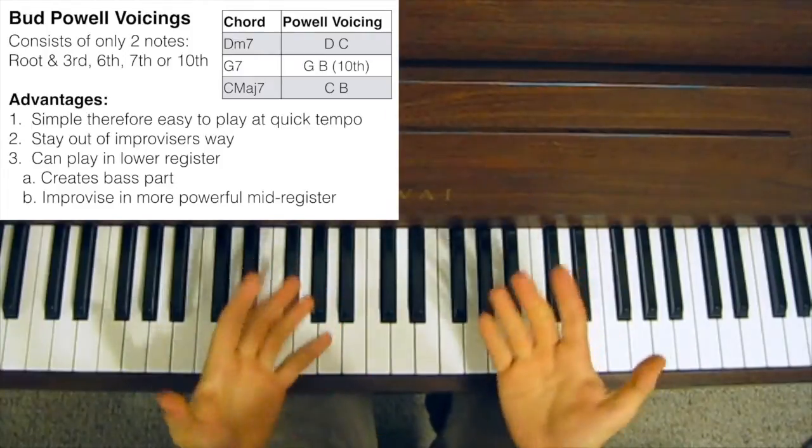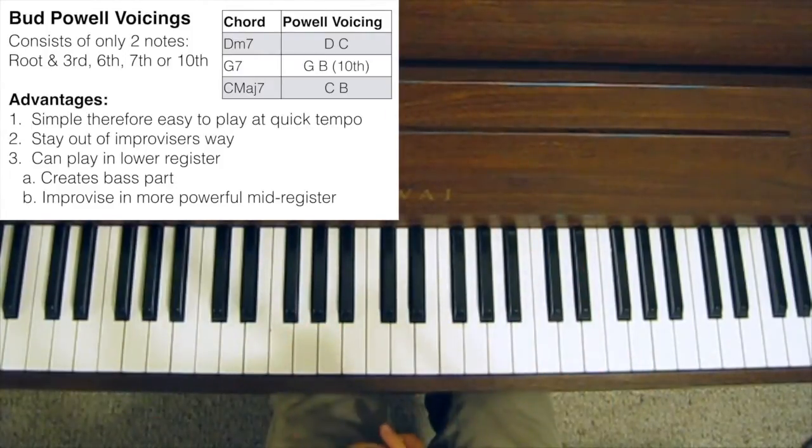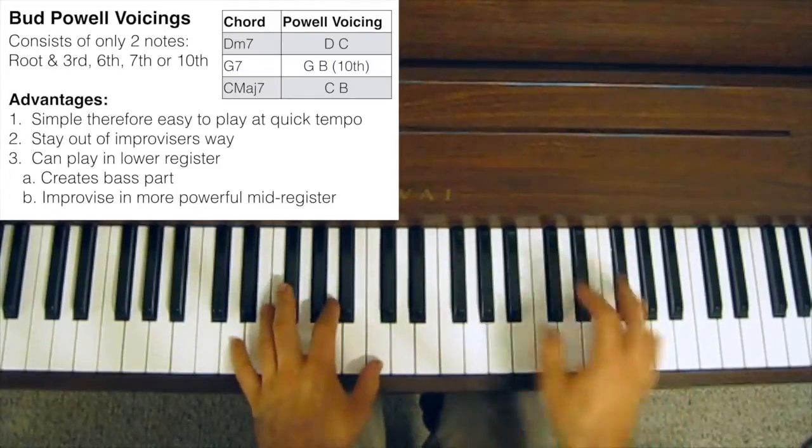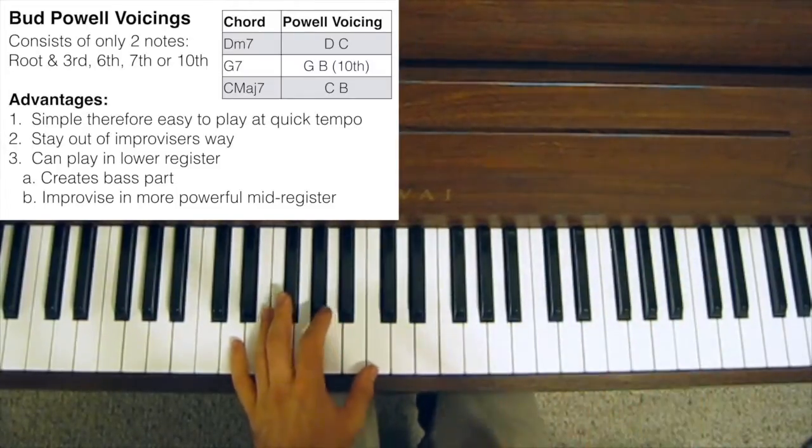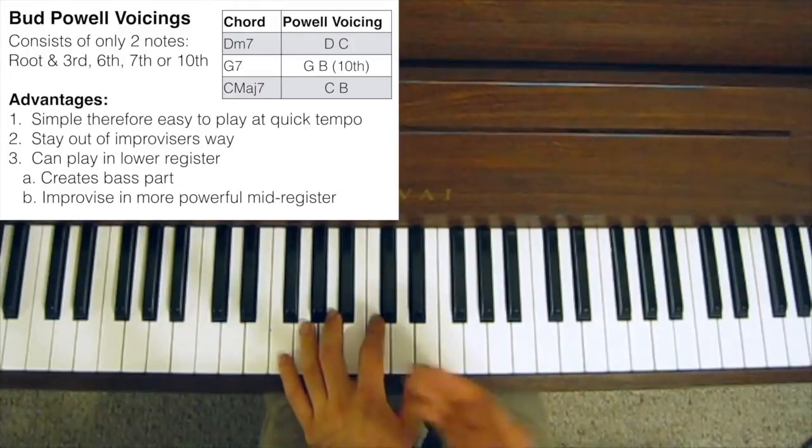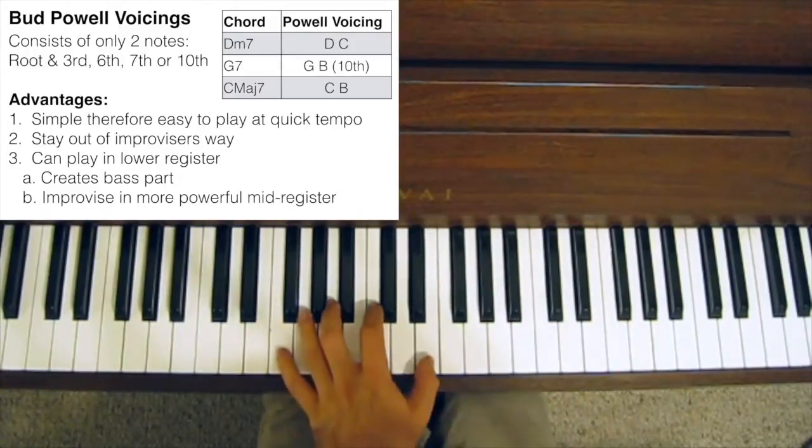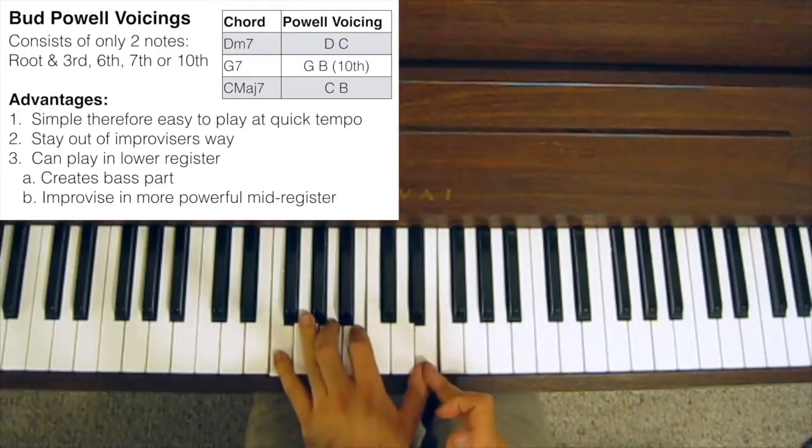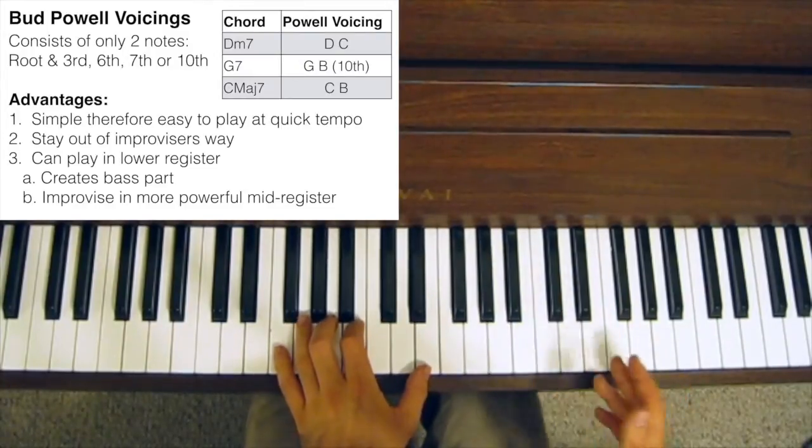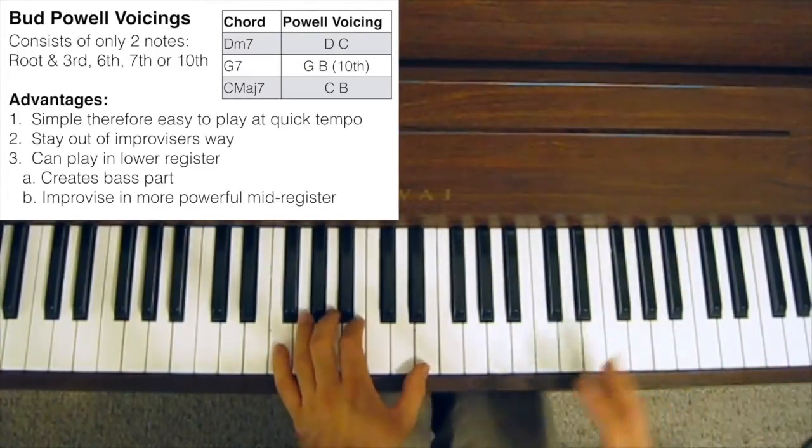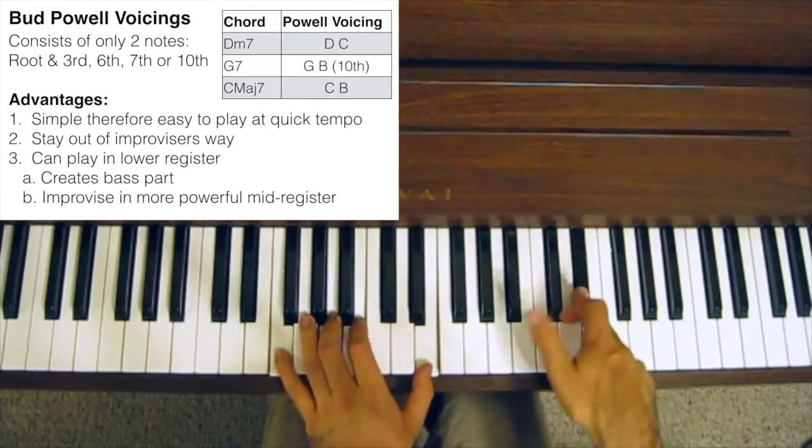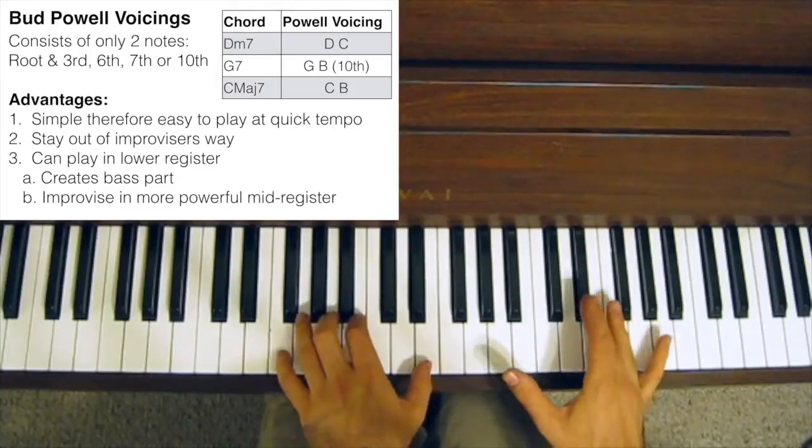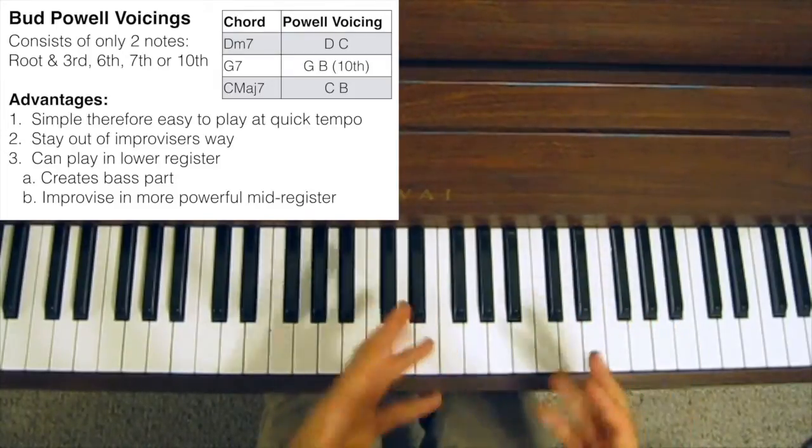Another advantage of this simplicity is that you're probably not going to get in the way of any improvisation that either you're playing on top or someone else is playing. Whereas, if you're playing the rootless Bill Evans style chord voicing, on the G7 you're playing the 9th and the 13th. If at that point the soloist, whoever that is, decides to play a b-13 and to really focus his solo around a b-13, that can sound a little bit clashy.